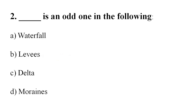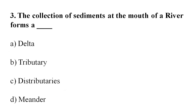Question 3: The collection of sediments at the mouth of a river forms a ___. Option A: Delta. Option B: Tributary. Option C: Distributaries. Option D: Meander. Your correct answer is Option A, Delta.